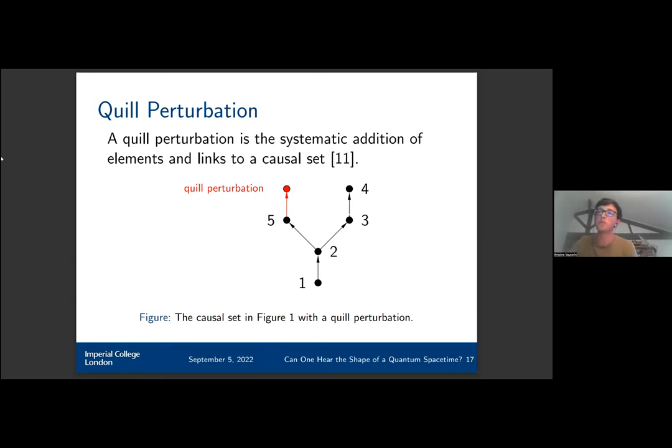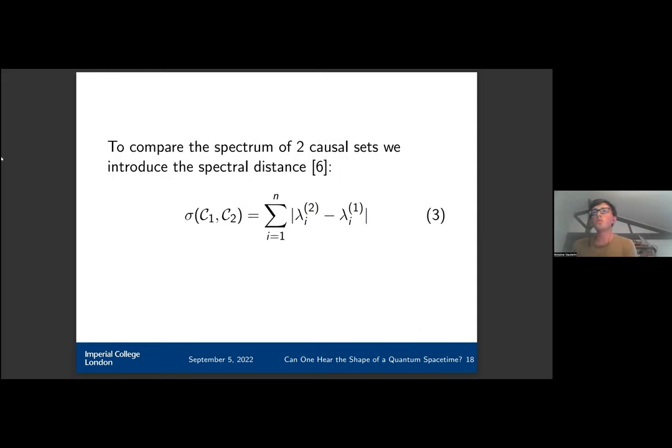The resulting spectrum will be different. So what we want to do is quill perturb causal sets and then compare the spectra of the quill perturbed version of the causal set and the original causal sets. To do this, we introduce the spectral distance, which will simply be the sum of the absolute values of the differences of the eigenvalues of the two causal sets.